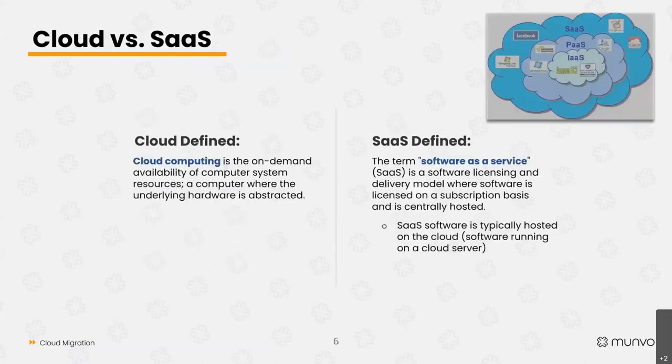Cloud versus SaaS: cloud is the abstraction of computers, as described. SaaS — Software as a Service — is a software licensing and delivery model, essentially renting software for a period of time. A software company acquires cloud infrastructure or other systems and hosts their software on it. So SaaS describes how you use the software — it could run on a cloud, but it doesn't need to. That's the key difference between the two terms.